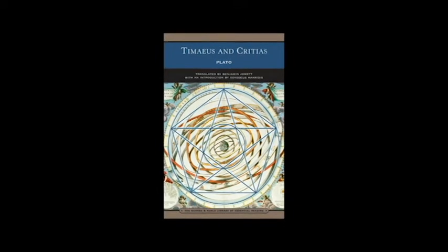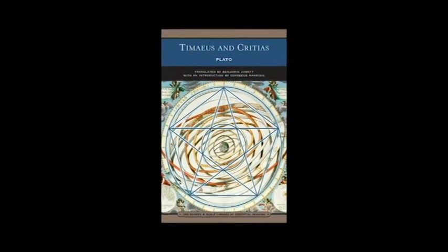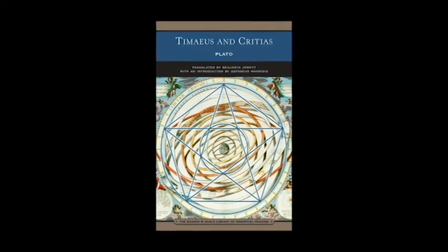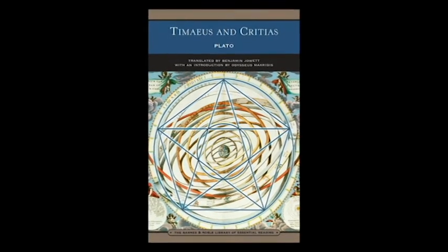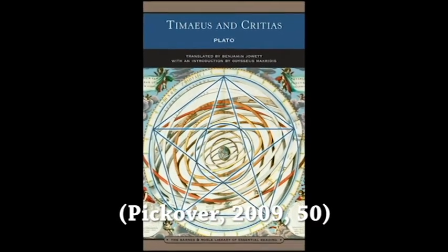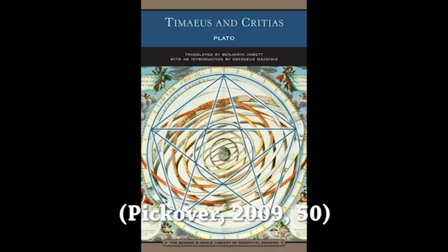The ancient Greeks recognized and proved that only five Platonic solids can be constructed. Plato described the five Platonic solids in Timaeus in around 350 BCE. He was not only awestruck by their beauty and symmetry, but he also believed that the shapes described the structures of the four basic elements thought to compose the cosmos.